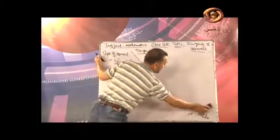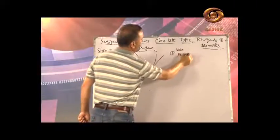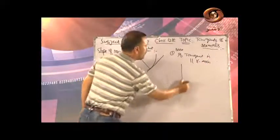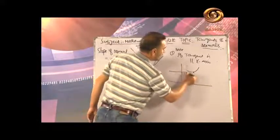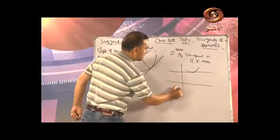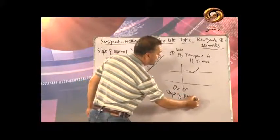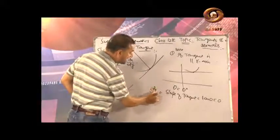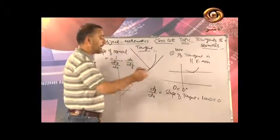Note: If the tangent is parallel to the x-axis, then the angle theta is 0. So slope of tangent = tan(0) = 0, which means dy/dx = 0 at that point. This is an important condition to remember.